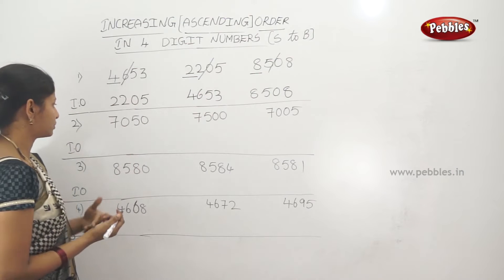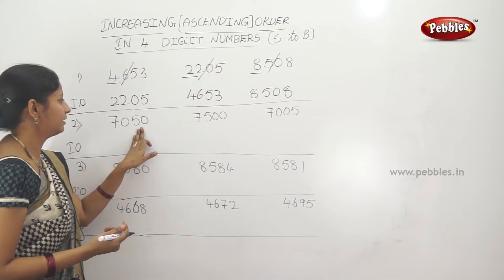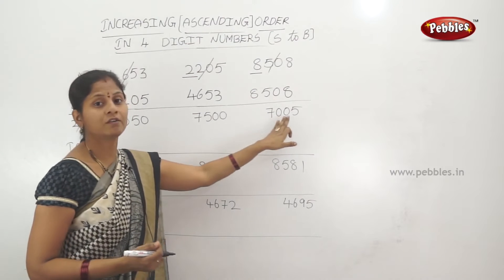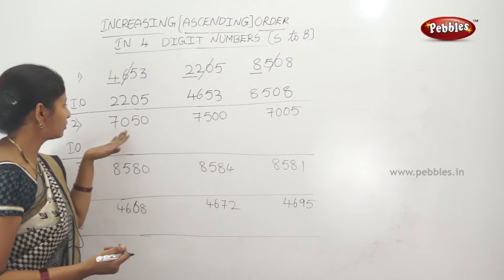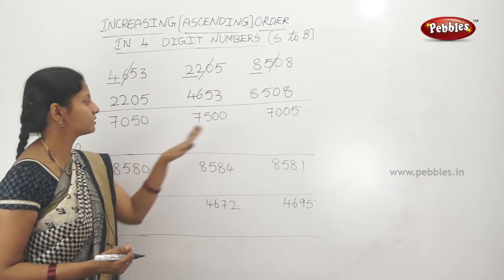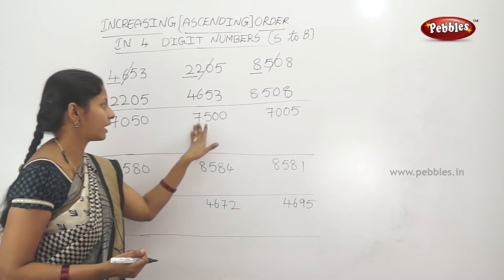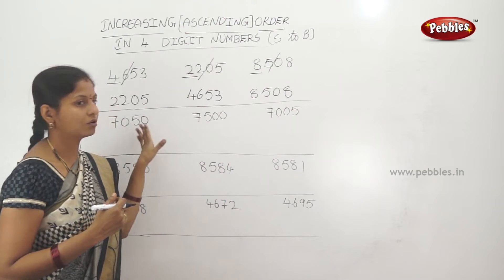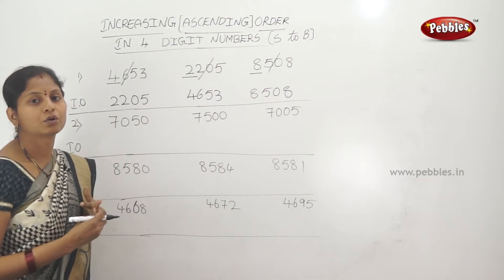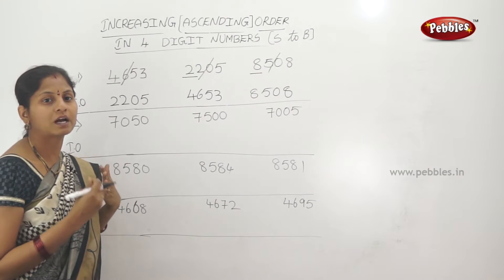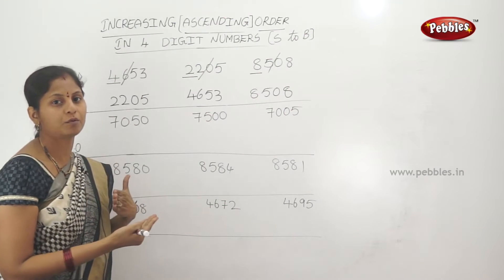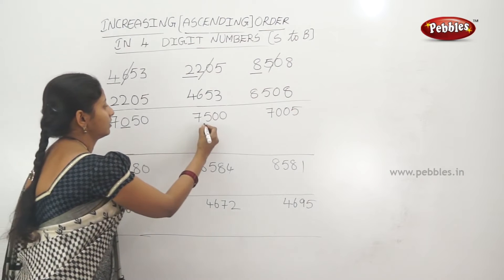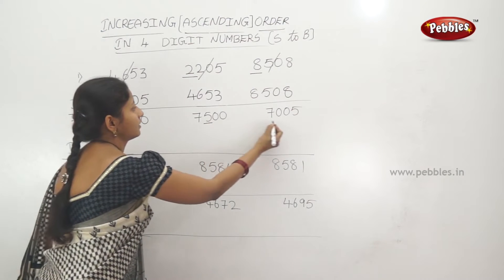Next example: 7,050 — 7,500 — 7,005. All three numbers start with 7, so the starting digits are the same. The second digits are 0, 5, and 0 — so we compare those.